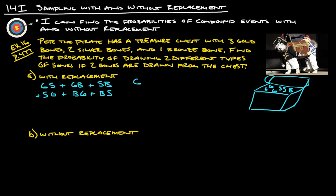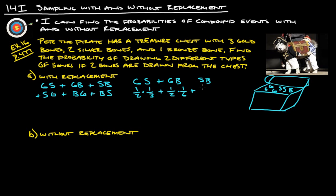Let's figure that out. Gold and then silver — with replacement, the probability of getting a gold first is three out of six, which reduces to one-half. Then, since it's with replacement, you stick it back in, and silver is two out of six, which reduces to one-third. Gold and bronze: probability of gold is one-half, probability of bronze is one-sixth. Silver and bronze: silver is one-third, and bronze is one-sixth.